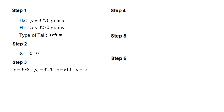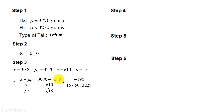Step three — test statistic: x-bar = 3080, mu = 3270, s = 610, n = 15. Substituting into the t-statistic formula, computing the numerator and denominator, we get a test statistic of negative 1.21. I highly suggest using StatCrunch to compute this, and I will show you how next.